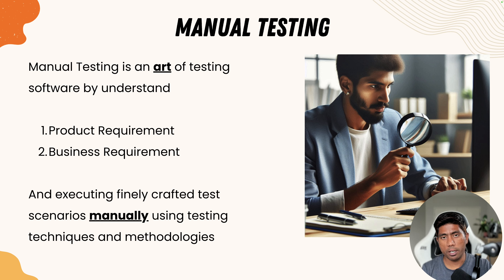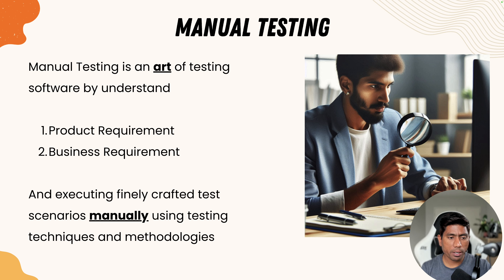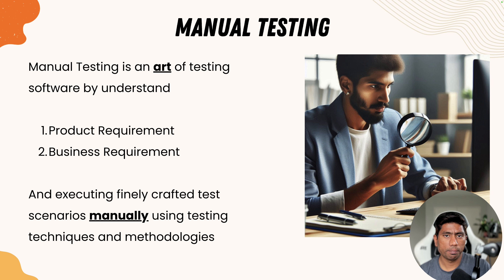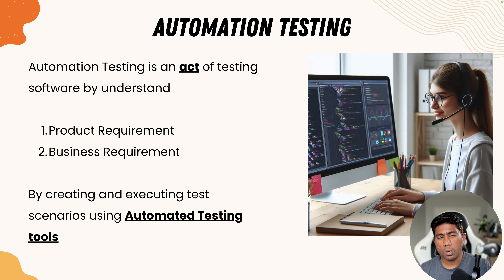As a test engineer, you are not only using the application as an end user but thinking beyond an end user. You are testing the application as if something could go wrong and finding the best way to identify it before it lands in the customer's hand. Manual testing involves executing finely crafted test scenarios in a manual fashion, finding issues, and reporting those bugs in a JIRA or any bug tracking system so that developers and the entire team are on the same page.